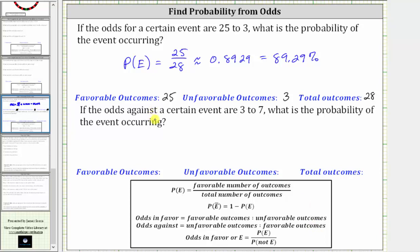So if the odds against the event are three to seven, there are three unfavorable outcomes and seven favorable outcomes. And therefore, the total number of outcomes must be seven plus three, which is 10.